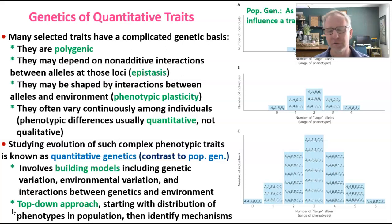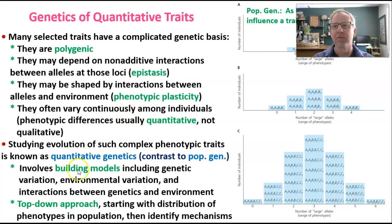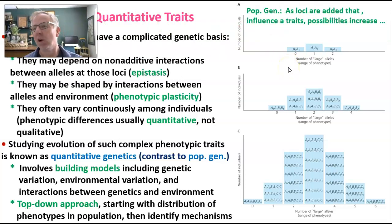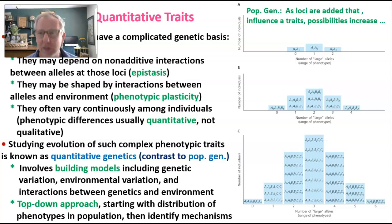The figure here represents the range of variation as we have more genes and loci affecting a single trait. With one gene and two alleles — A1 and A2 — we get three different phenotypes if there are additive effects: homozygous for one allele shows one phenotype, homozygous for the other shows a second phenotype, and heterozygous shows an intermediate phenotype. That represents alleles with additive effects — they add up.